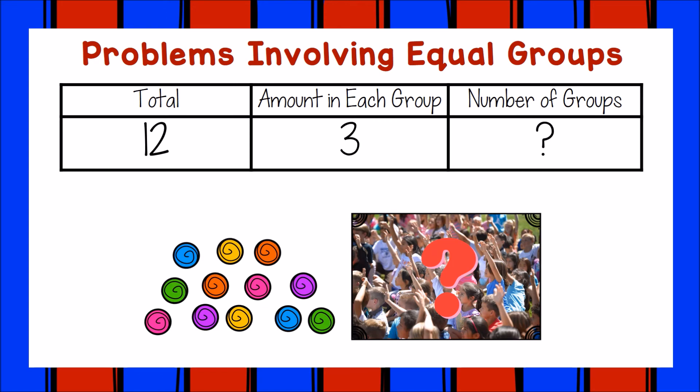Let's see, we can take away three candies once, three candies twice, three times, four times. We just made four groups. That means Alanna can give candy to four friends.